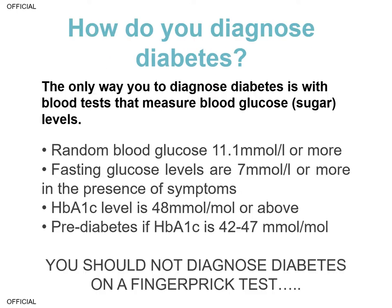How do you diagnose diabetes? It's really important to emphasize that the only way you can diagnose diabetes is with a blood test — a blood glucose laboratory test. You would diagnose diabetes in somebody who has symptoms if their random blood glucose is 11.1 mmol/L or higher, if their fasting glucose level is 7 mmol/L or higher, or if their HbA1c — a blood test that measures your average glucose over the last 6 to 8 weeks — is above 48 mmol/mol. If your HbA1c is elevated between 42 to 47 but not quite high enough to diagnose diabetes, you may have pre-diabetes.